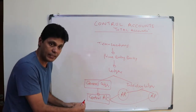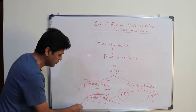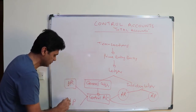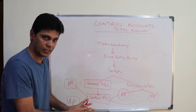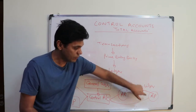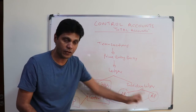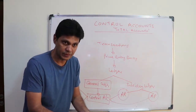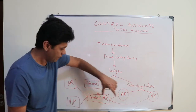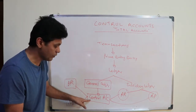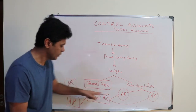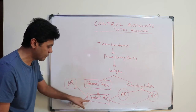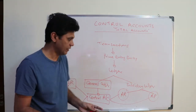Since we have both an accounts receivable ledger and an accounts payable ledger, we must maintain two control accounts in the general ledger: the accounts receivable control account and the accounts payable control account. The subsidiary ledger has accounts receivable for customers and accounts payable for suppliers, each controlled by their respective control account.